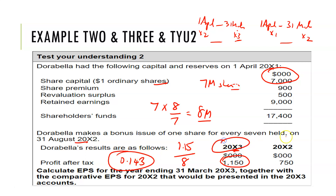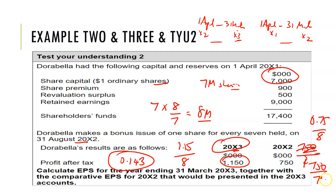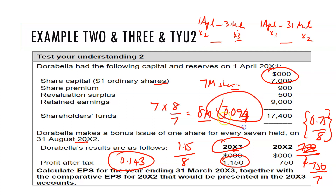For the prior year, I do exactly the same thing: 0.75 million divided by 8 million. You could have done 750,000 divided by 7 and then multiplied by the bonus fraction, but ultimately you need to arrive at 0.75 divided by 8. That gives 0.094 when rounding up.